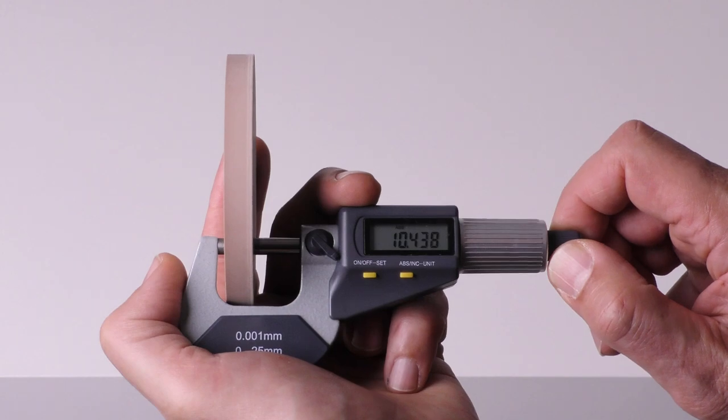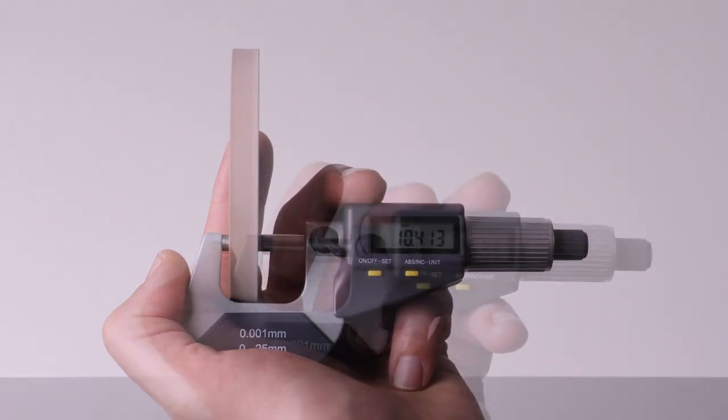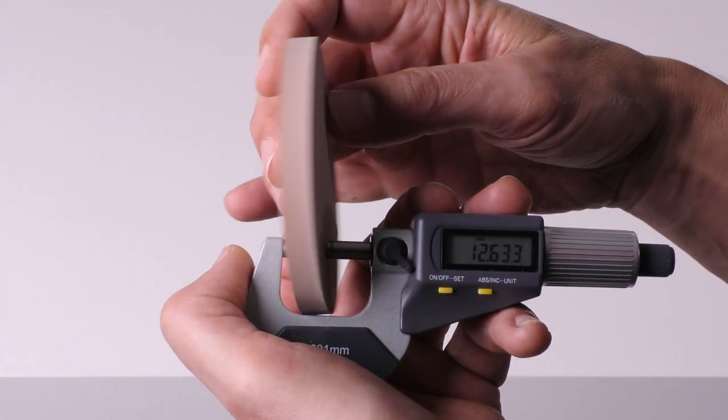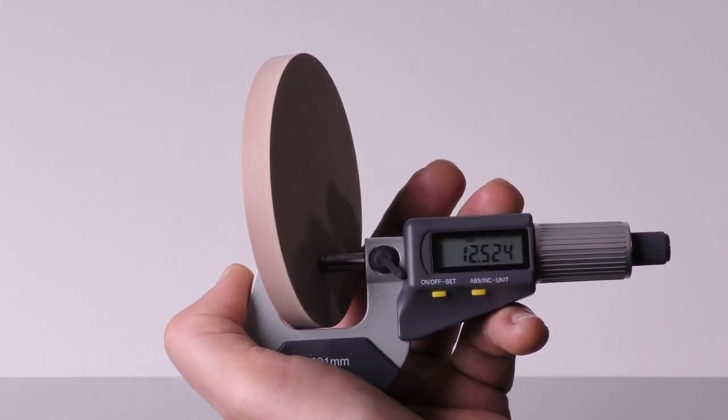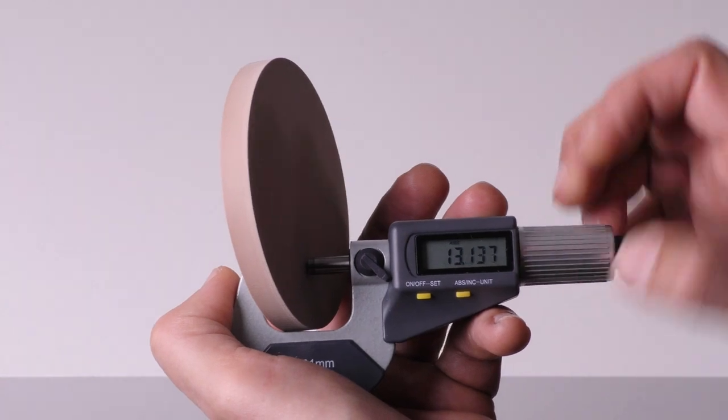Another mistake when measuring is to place the micrometer at an angle on the specimen. This will also significantly falsify the measuring result.